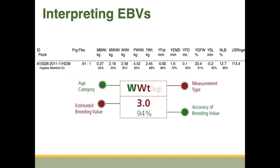Let's go through an example of what these EBVs actually mean. These estimated breeding values each have a set of abbreviations — an age category and a measurement type. In this example, WWT stands for weaning weight, and this animal has a 3.0 kilogram estimated breeding value for weaning weight. What that tells us is that this individual has the genetic potential to be three kilograms heavier at weaning time than the base average of that breed. His EBV is his genetic potential for that trait.